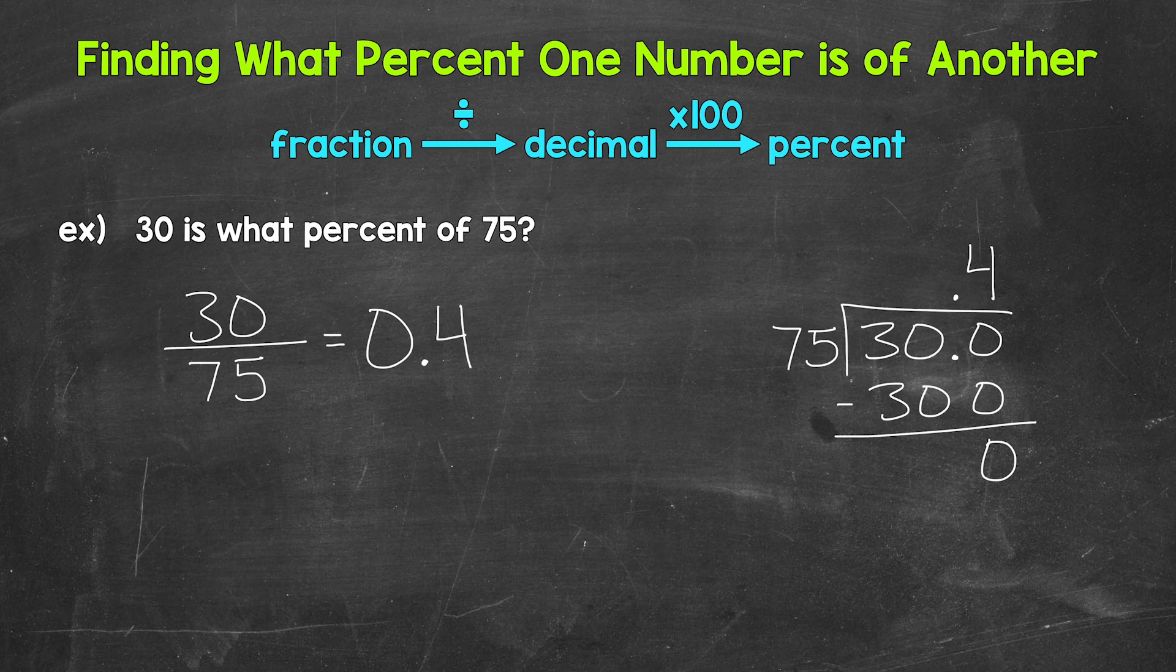Now we need to convert that decimal to a percent by multiplying it by 100. And a quick way to do that is move the decimal twice to the right. So once, twice to the right, and we can fill this gap, this place with a zero. So we get 40. So our percent is 40, 40%.